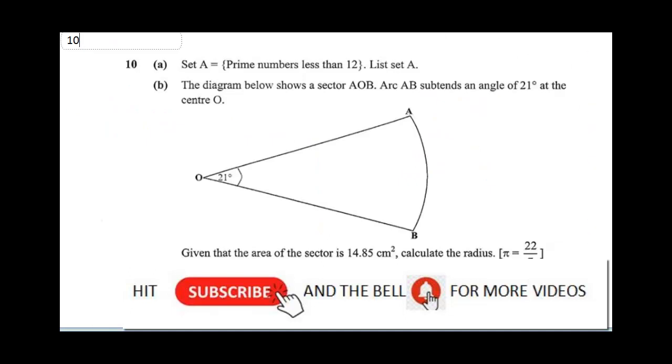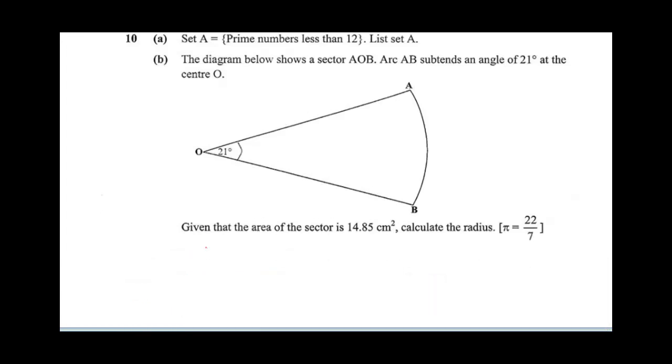Question 10 says, set A equals prime numbers less than 12, list set A. To list set A, A will be the set of prime numbers less than 12: 2, 3, 5, 7, and 11. These are the prime numbers less than 12.